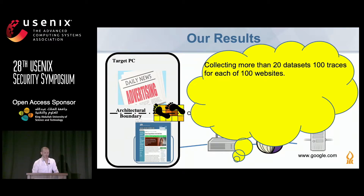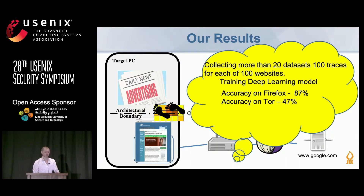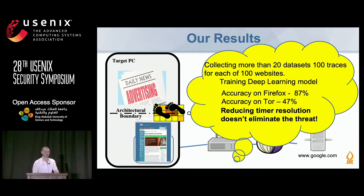We collected more than 20 datasets of 100 traces for each of 100 websites, plus several unlabeled websites. We trained a deep learning model and achieved good results on Firefox and Tor in terms of accuracy across 100 websites. Most importantly, reducing time resolution does not eliminate the threat — it doesn't help.